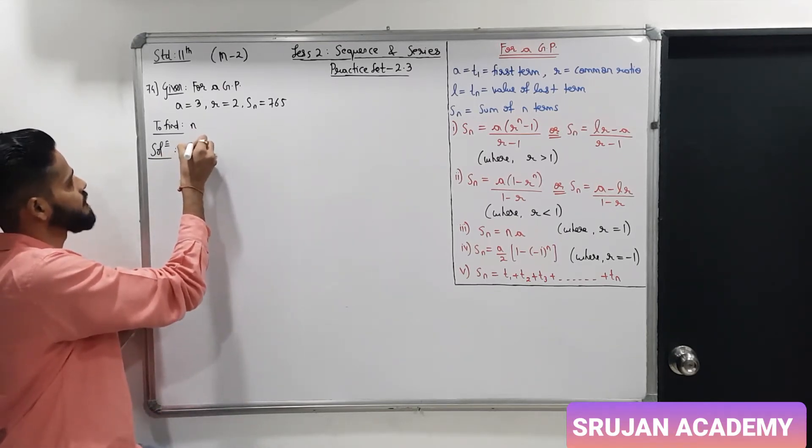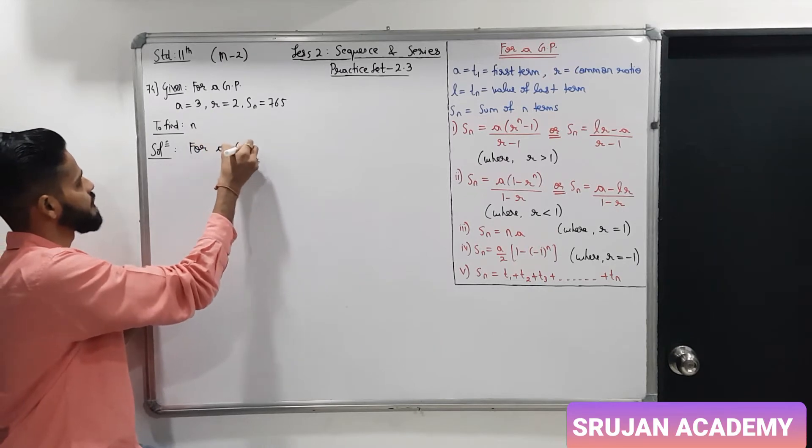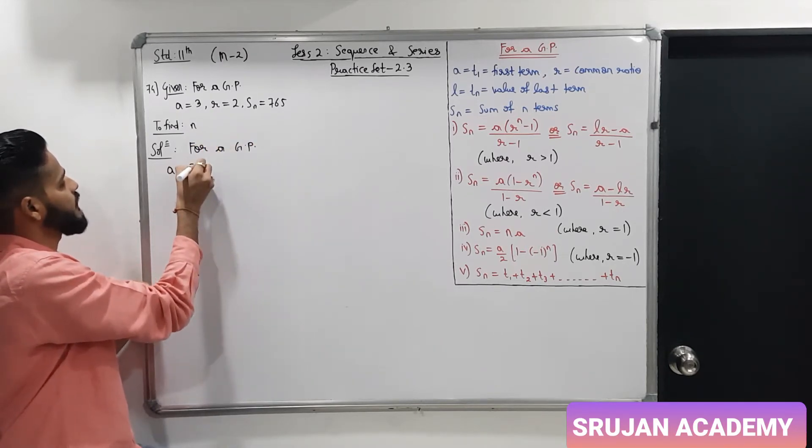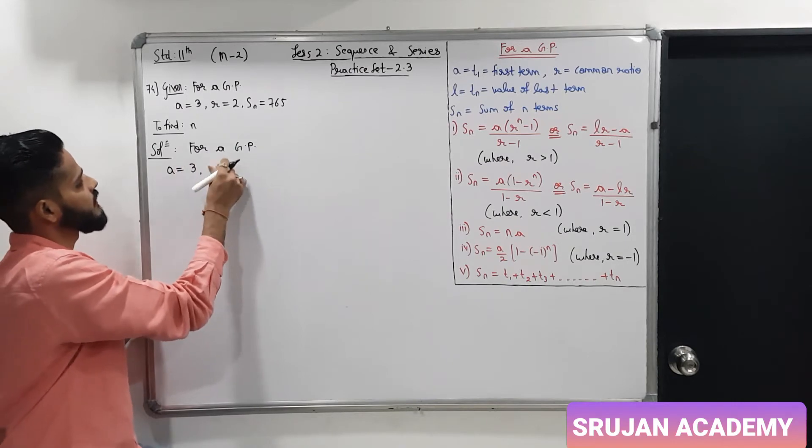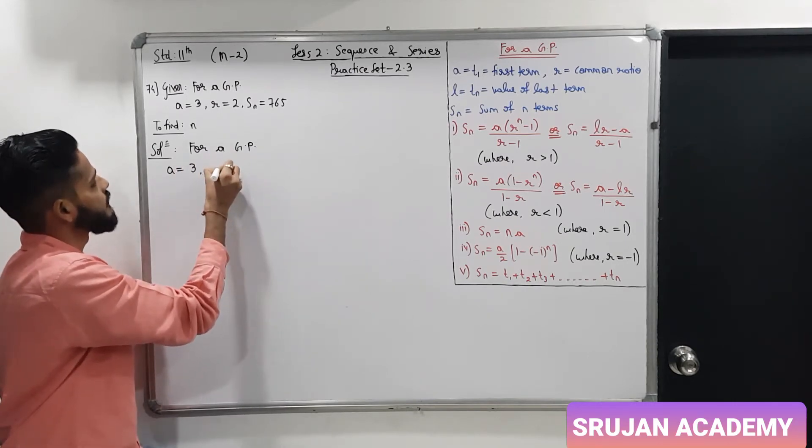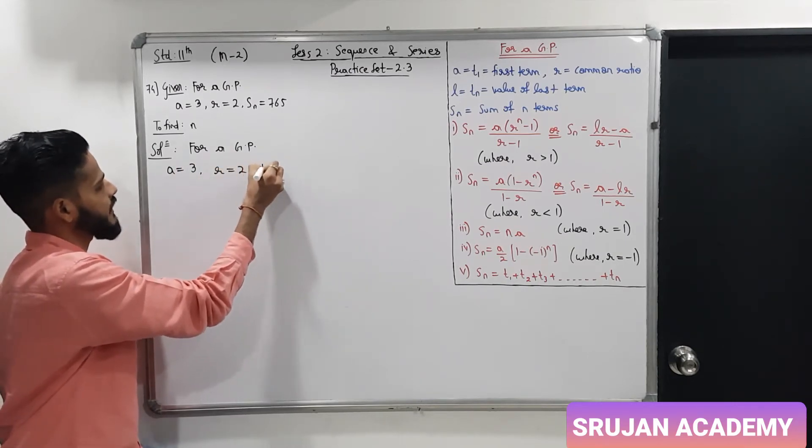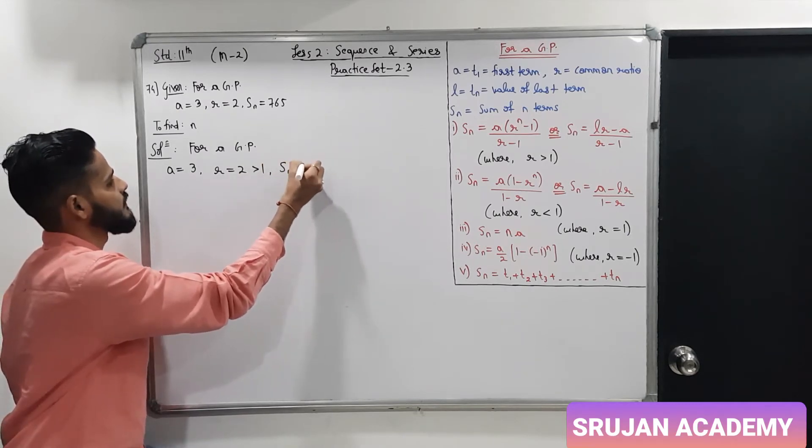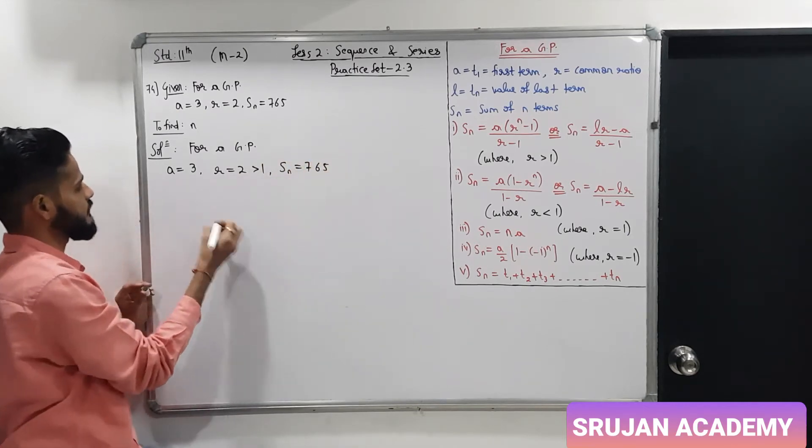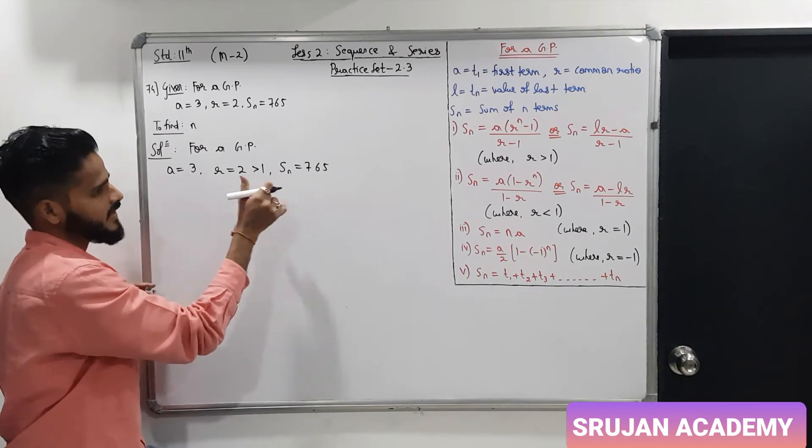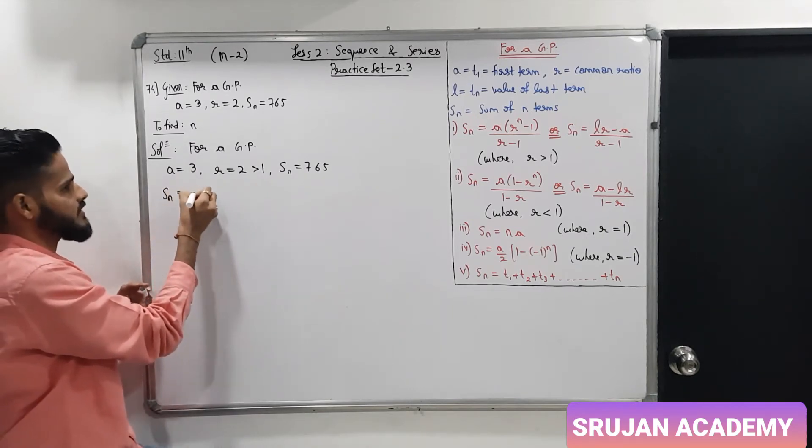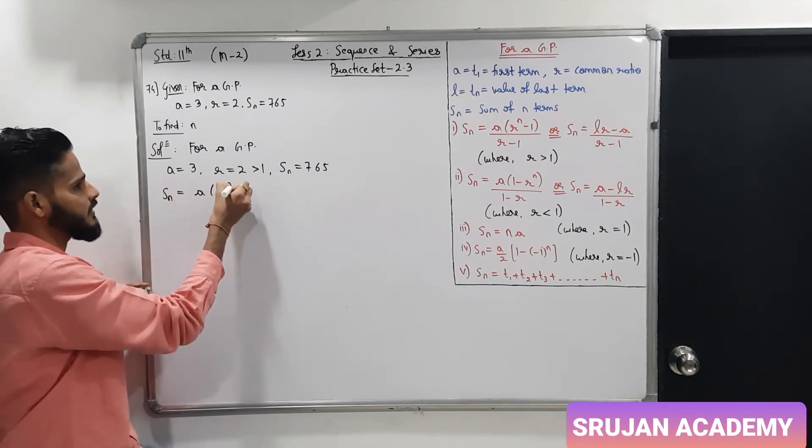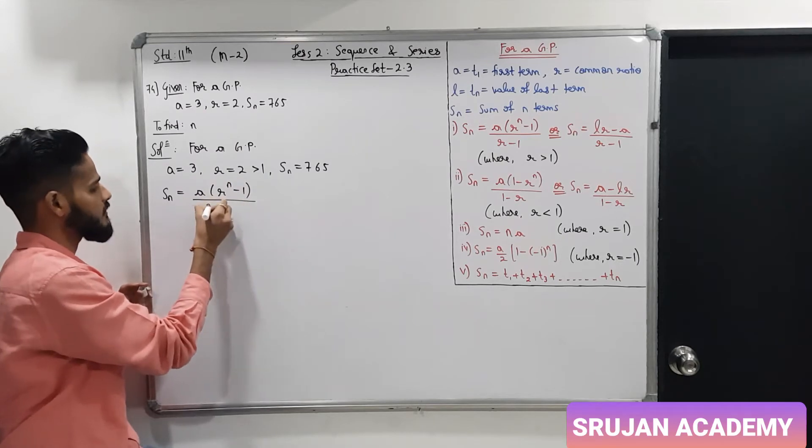For a GP, a is 3, R is 2, greater than 1. Sn is 765. R is greater than 1, so we use the formula Sn is a into R raise to n minus 1 upon R minus 1.